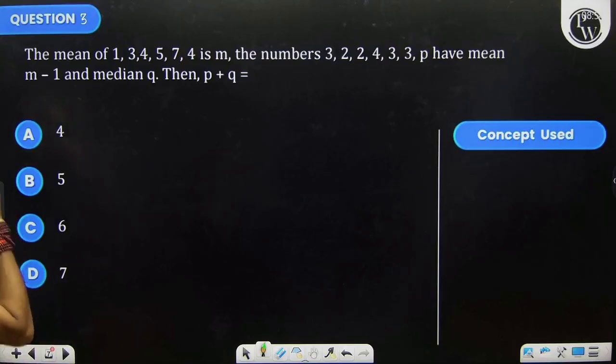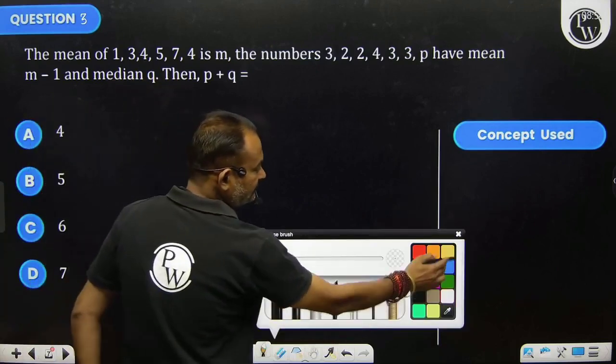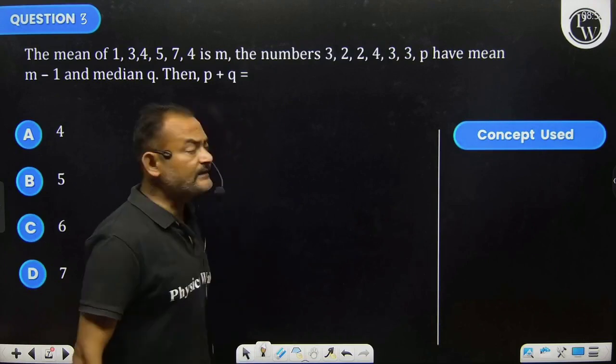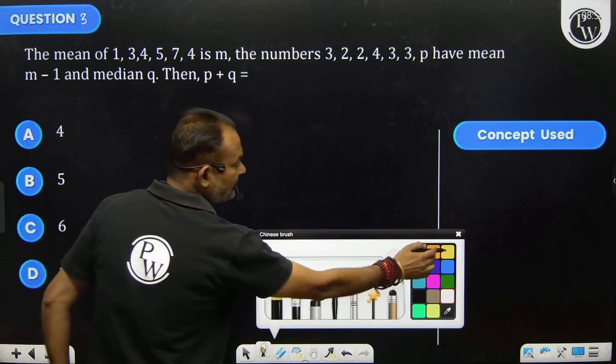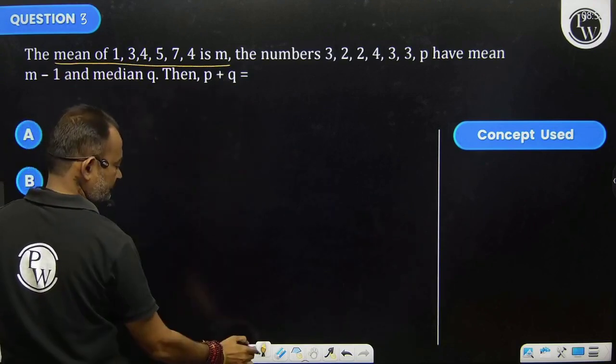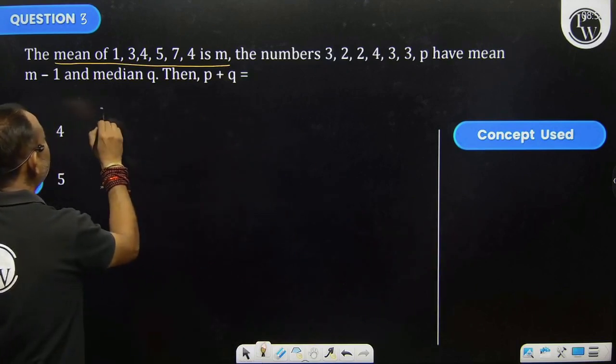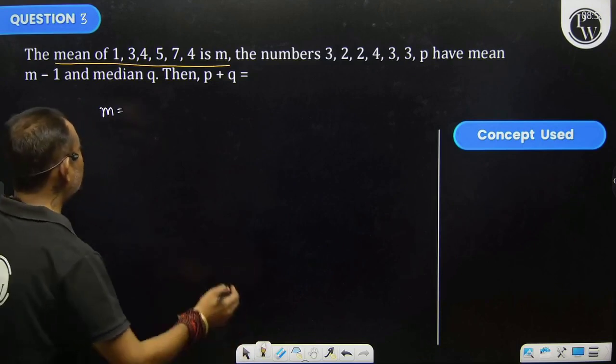The mean of some numbers is given. First we will use this expression. When the mean of some numbers is given m, this expression will give you the value of m. Then m equals the same formula: sum of observations divided by number of observations.